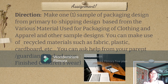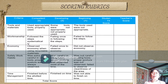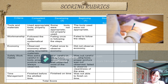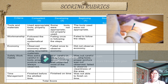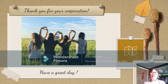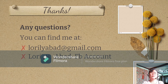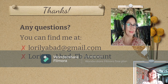The deadline for submission of your video or output will be on Monday, May 16, 2021, at 6 p.m. Your output will be graded through this scoring rubric covering tools and materials, workmanship, economy, safety work habits, and time management. The highest score you can get is 5, and the lowest score is 1. Please be guided. Thank you, class, for your cooperation. Have a great day. See you again next time. Any questions or clarifications, you can find me at lorileabat@gmail.com or Lorilee Abat on my Facebook account.